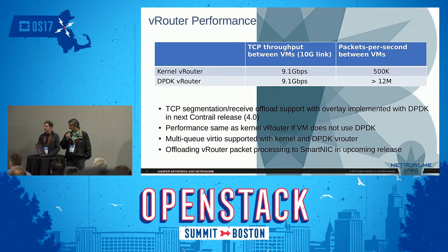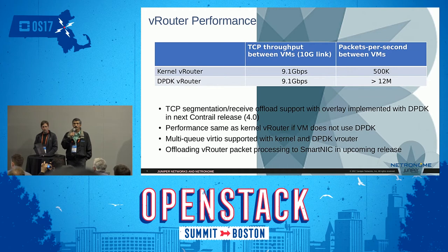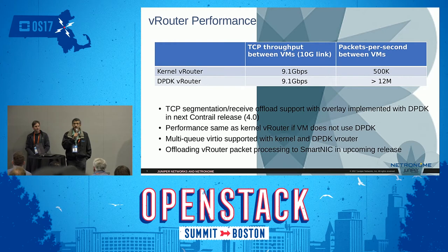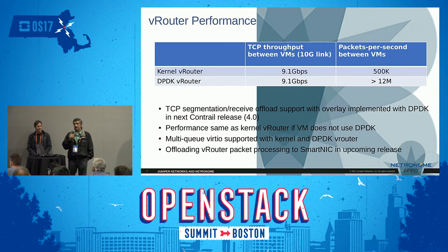We're able to get line rate on a 10 gig link, and with a two-by-10-gig LAG we get about 17 gigabits per second. With the kernel VRouter we only get about half a million packets per second, but with the DPDK VRouter we get upwards of 12 million packets per second. However, this comes at the expense of CPU — it takes six to eight CPU cores to achieve that performance. What would be really nice is if we can get the performance of an SR-IOV interface together with the flexibility that an overlay provides, which is where the integration with the SmartNIC comes in. In our upcoming release, we have moved the VRouter into the SmartNIC, so all overlay processing happens on the SmartNIC, and we get much better numbers. I'll hand it over to Chris Telfer from Netronome to talk about that.